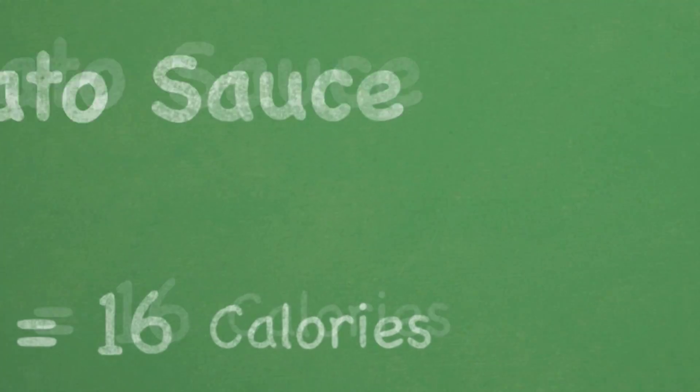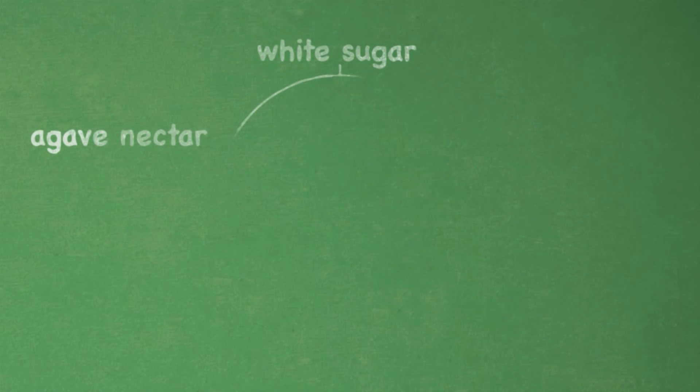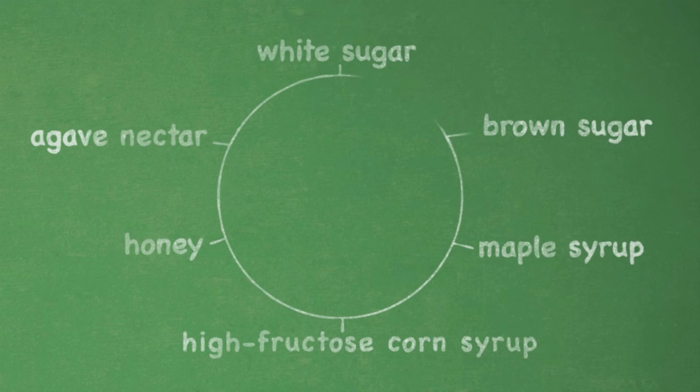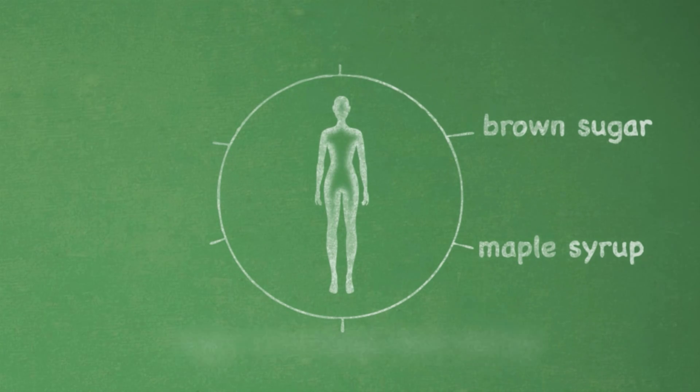Just one teaspoon of this sweet substance has 16 calories. And whether it's white sugar, agave nectar, honey, high fructose corn syrup, maple syrup, or brown sugar, it has virtually the same effect in your body.